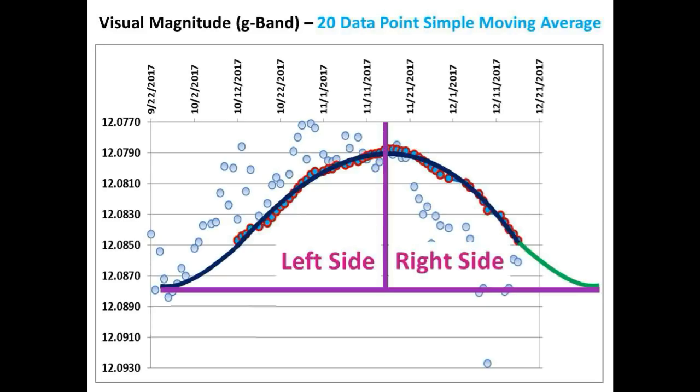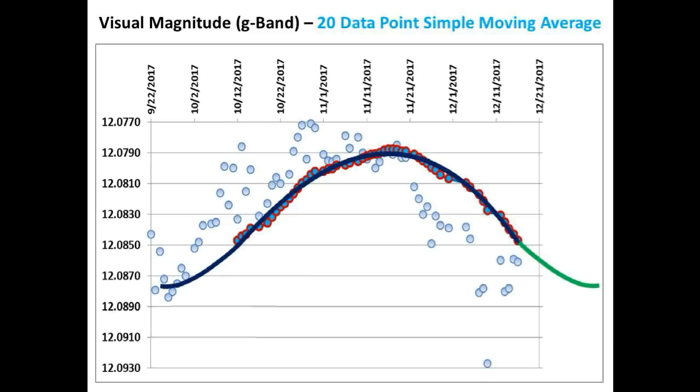In other words, the left side of the light curve seems to be a mirror image of the right side of the light curve. We noticed this weeks ago using the 20 data point simple moving average, and that is how we got this part of the prediction correct.